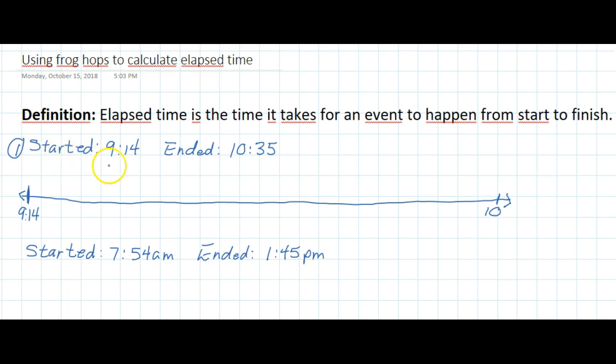Okay, so we have an event which started at 9:14 and it's ending at 10:35. At one end of the number line you can see that I've drawn 9:14, and at the other end of the number line you can see that I've started writing in 10:35. And now we're just going to use frog hops to count on our time.